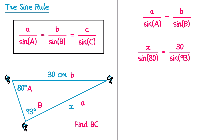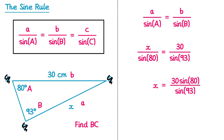We multiply both sides by sine 80, giving X on the left and 30 over sine 93 multiplied by sine 80 on the right, which we write as 30 sine 80 over sine 93. Typing this into a calculator gives X equal to 29.607... Rounding to one decimal place, X equals 29.6 centimetres.